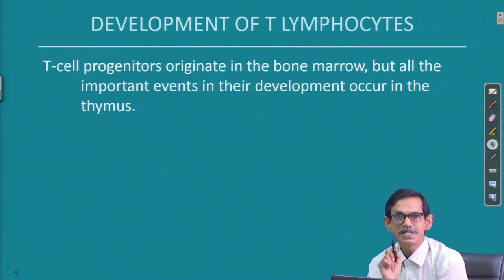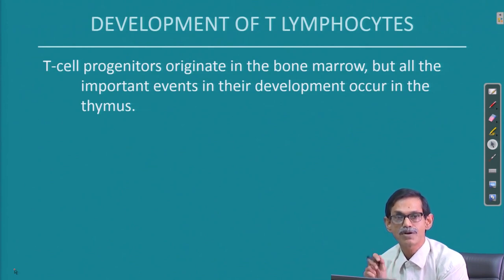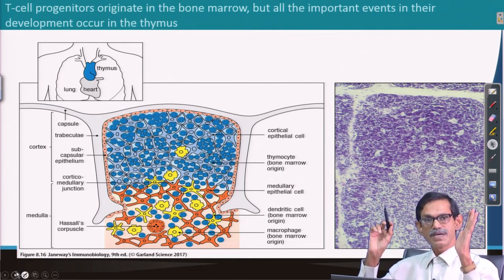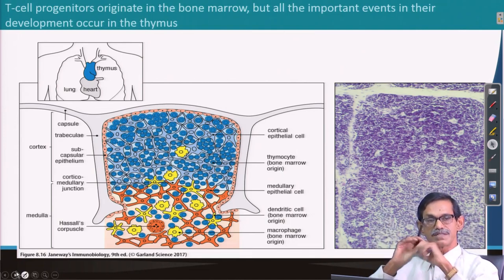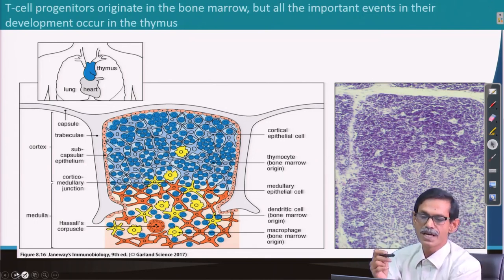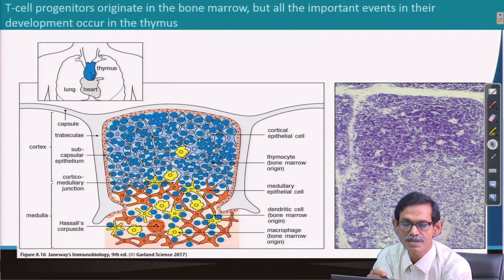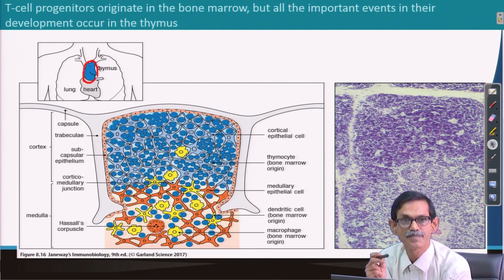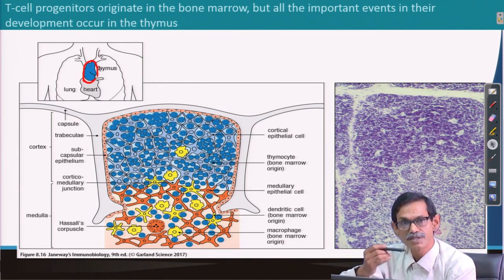T cell progenitors originate in bone marrow, but all important developmental events occur in the thymus. The thymus is located just above the heart. If you cross-section the thymus, you see multiple lobules arranged in series.